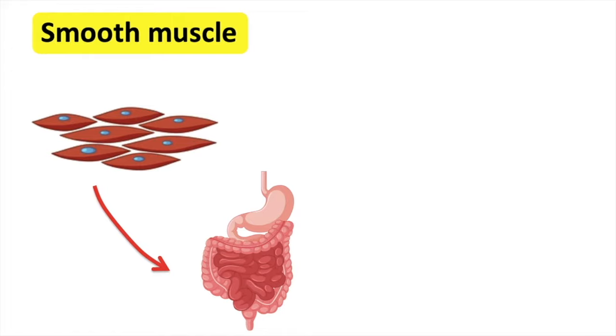This type of muscle is involuntary, so the movement is activated automatically by the body. They contract and relax automatically to digest food or to aid the movement of blood.